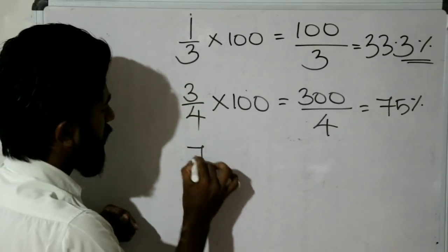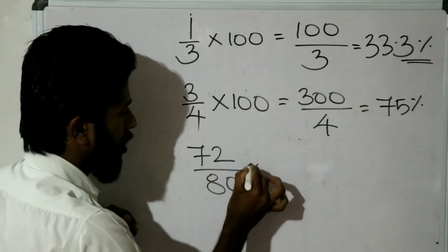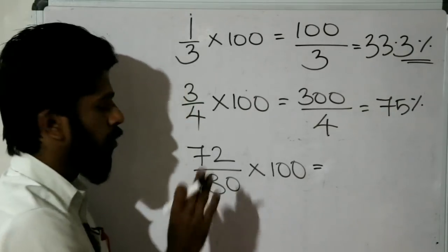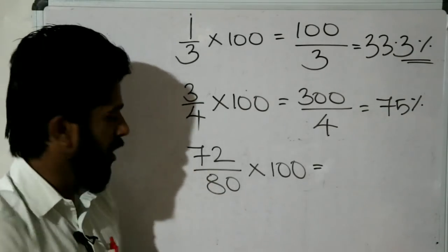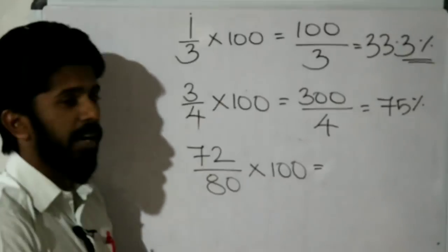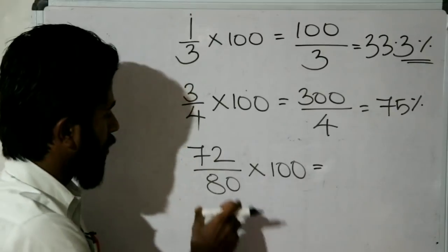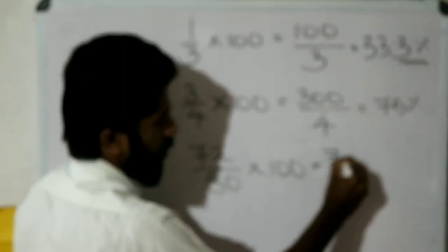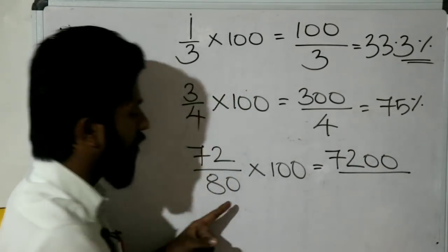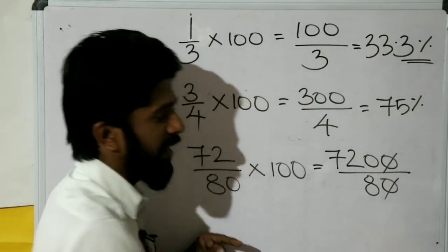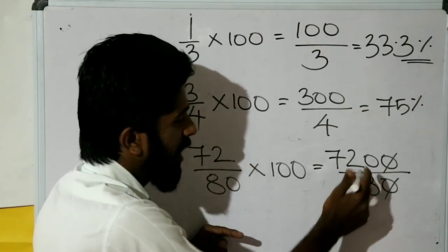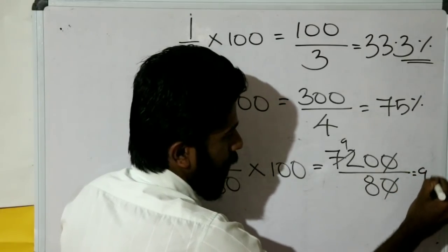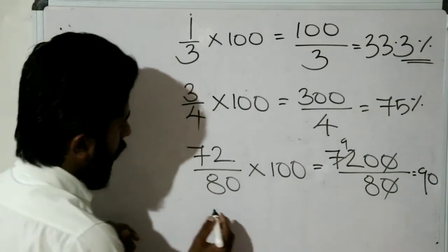Next, third problem: 72 divided by 80. Into 100 — 72 into 100 is equal to 7200 divided by 80. Canceling zeros: 720 divided by 80 — 72 and 8 gives 9 times — so 90 percentage. 90 percentage.